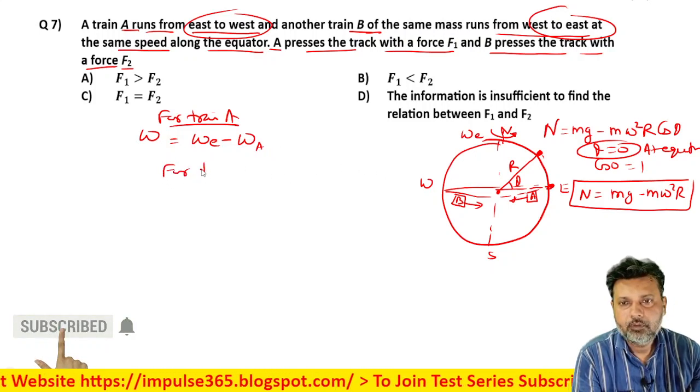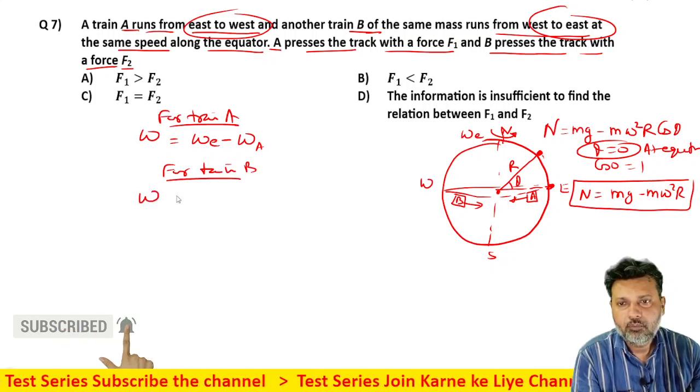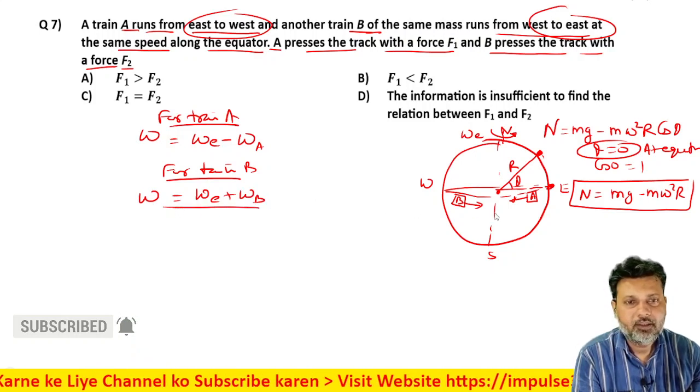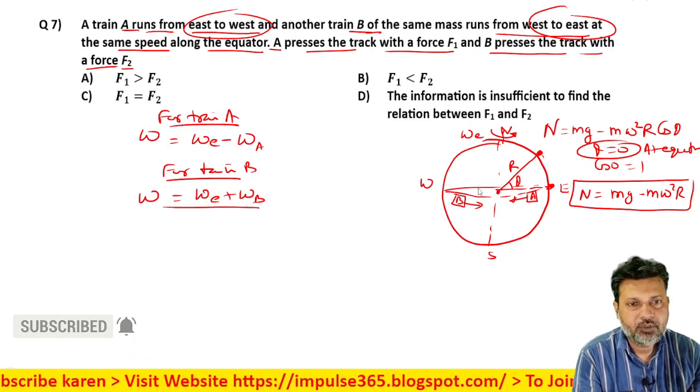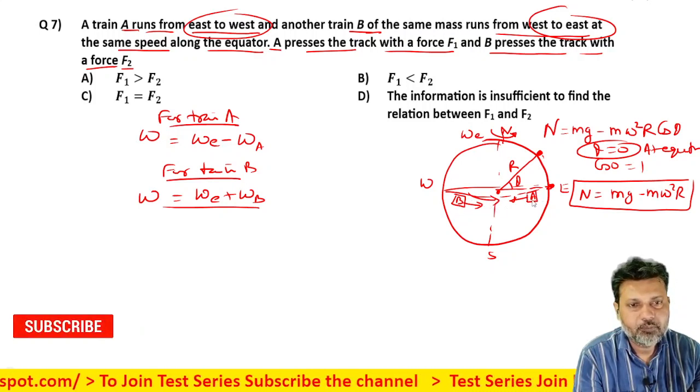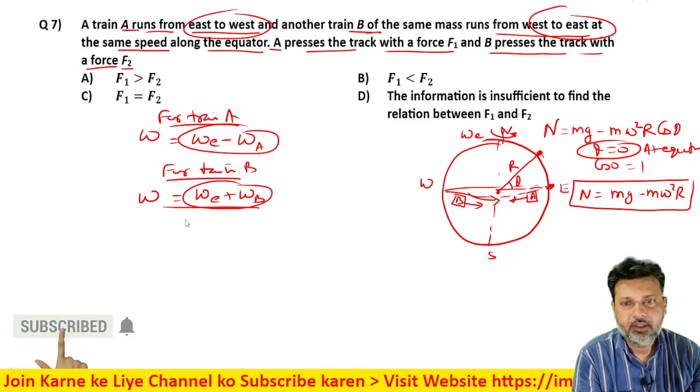Now for train B, what will be omega's value? Omega_e plus omega_b. Both will add in B's case because it's rotating in the same direction, so both add. Whereas in A's case, it's opposite direction, so we get the difference.